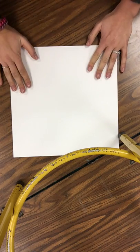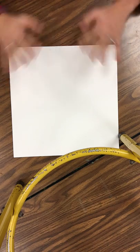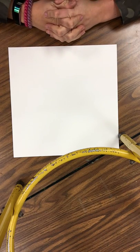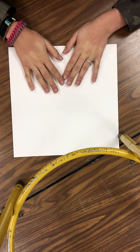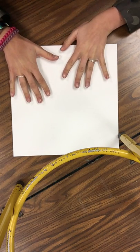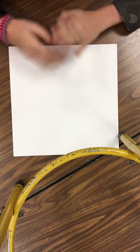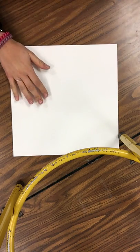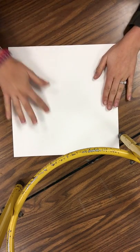Hello kindergarten friends. Today we are going to be making our Georgia O'Keeffe flowers. So the first thing that we're going to do is not put our name on it. I know, big surprise. We're actually going to start by creating our flower.